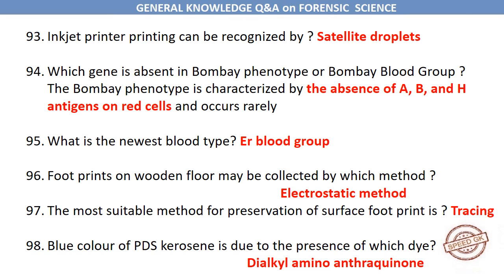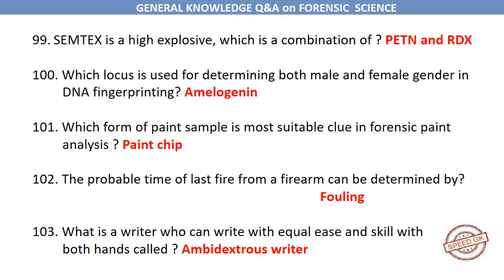What is the newest blood type? ER blood group. Footprints on a wooden floor may be collected by the electrostatic method. The most suitable method for preservation of surface footprints is tracing. The blue color of public distribution system kerosene is due to the presence of the dye dialkyl-amino-anthraquinone. SEMTEX is a high explosive which is a combination of PETN and RDX. The locus used for determining both male and female gender in DNA fingerprinting is Amelogenin. Which form of paint sample is the most suitable clue in forensic paint analysis? Paint chip. The probable time of last fire from a firearm can be determined by fouling.